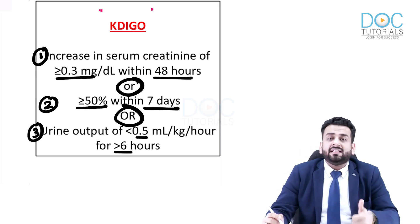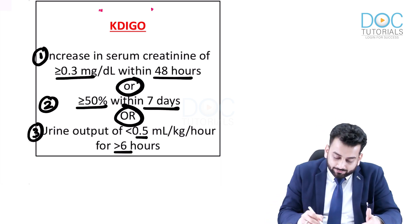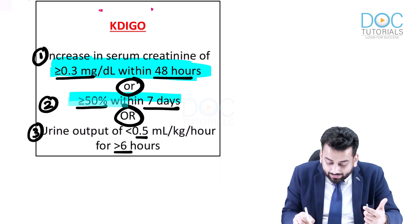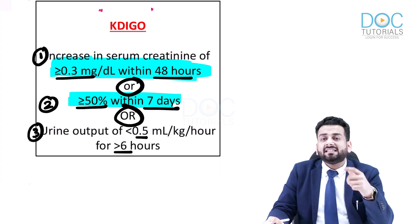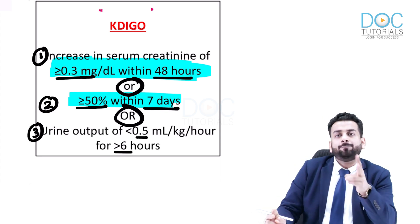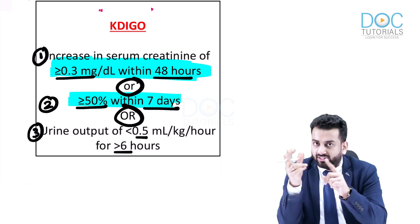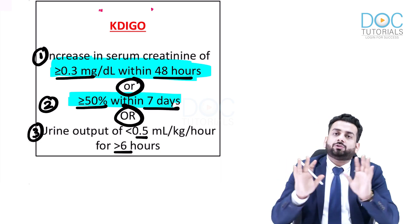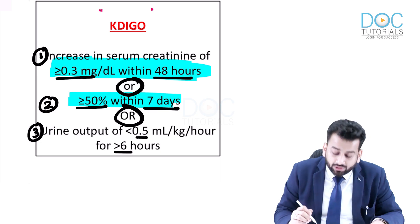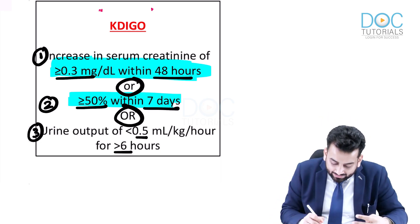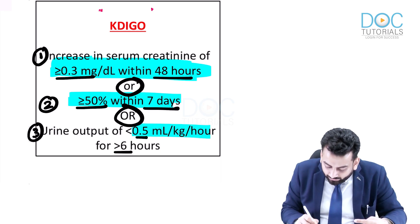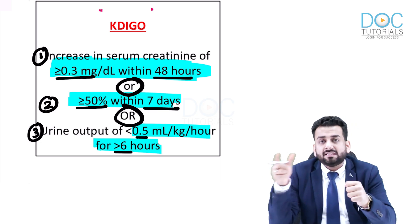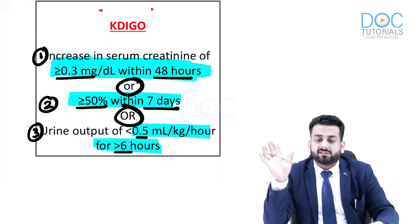To summarize the six key numbers: serum creatinine increase ≥0.3 mg/dL within 48 hours; ≥50% from baseline within seven days — for example, if baseline creatinine is 2, a rise to 3.2 (an increase of 1.2, which exceeds 50% of 2) is diagnostic; and urine output less than 0.5 ml/kg/hour for more than six hours. The six critical values are: 0.3, two days, 50%, seven days, 0.5 ml/kg/hour, and six hours.